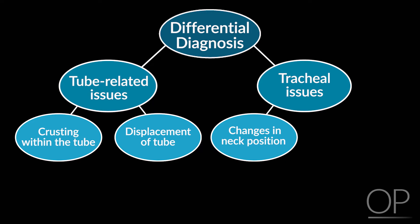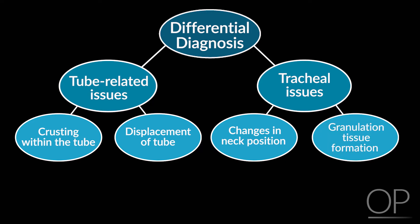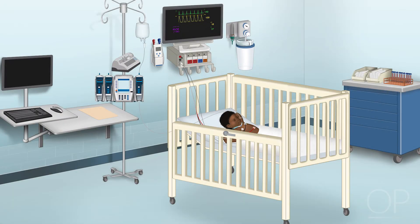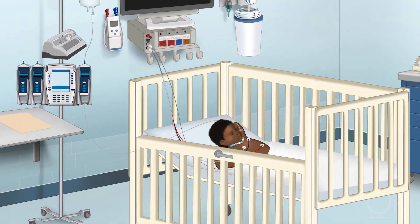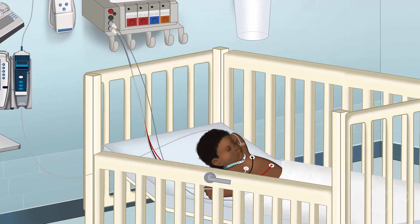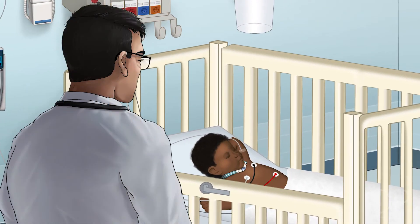Common tracheal issues can include changes in neck position so that the lumen of the tube is facing the anterior or, more commonly, the posterior tracheal wall, or sitting in a tracheal diverticulum that resulted from an anatomic abnormality, prior injury, or surgery. Or, the presence of granulation tissue formation around the tip of the tracheostomy tube from local irritation.